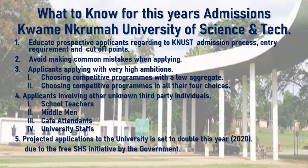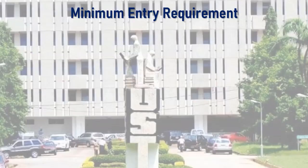Projected applicants to the university are set to double this year, 2020, due to the free SHS initiative by the government. The University of Science and Technology received a total of over 50,000 applications as of last academic year, and this year is expected to double to 60,000 or 70,000. Prospective applicants should be well informed about the university's requirements and selection process before applying.